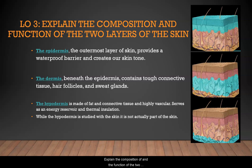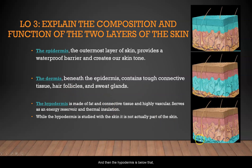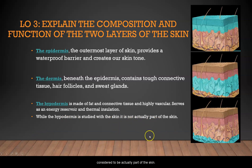Learning Objective 3: explain the composition and function of the two layers of the skin. The epidermis is the outermost layer, providing a waterproof barrier and creating our skin tone. The dermis lies beneath, containing tough connective tissue, hair follicles, and sweat glands. The hypodermis below is made up of fat and connective tissue, is highly vascular, and serves as an energy reservoir and thermal insulation — though it is not considered to be actually part of the skin.